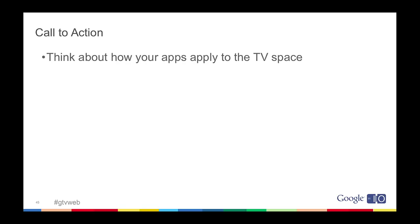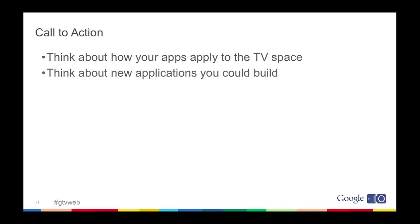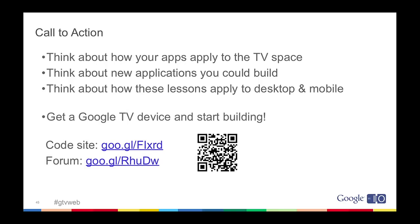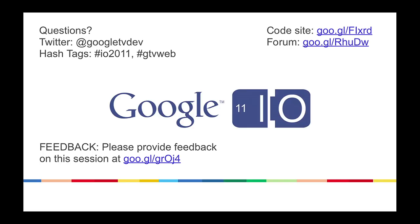So really what we're asking people to do is to think about how the applications you're already building might work in the TV space in the living room. Think about what new applications you can build because you're in that space. And personally I believe there are a lot of lessons we can learn about how to build better experiences that work on desktop and mobile once you look at how that works when you're kind of kicking back. Get a Google TV device, start building applications. If you have applications you want to build and need a device, get ahold of us - we can work something out. We have a code site, we have a forum that we participate in quite a bit. We're about out of time, so please provide feedback on the session - that helps us get better. Our hashtags are up there if you have questions.